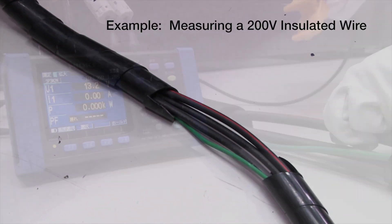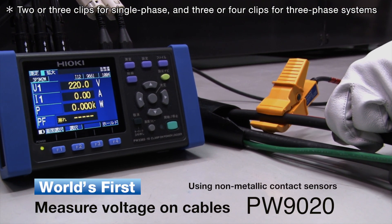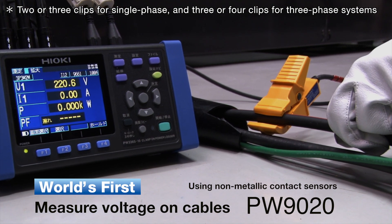All you need to do is clip it onto the insulated part of a wire. In this example, despite no metallic contact, 200 volts is measured quickly and accurately.